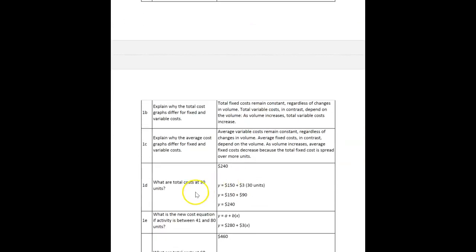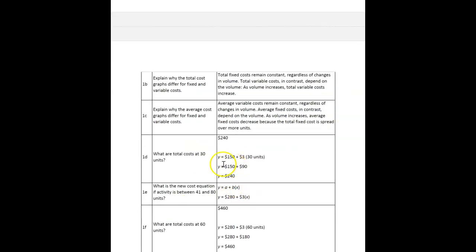What are the total costs at 30 units? That would be your fixed cost plus 3 times 30 units.